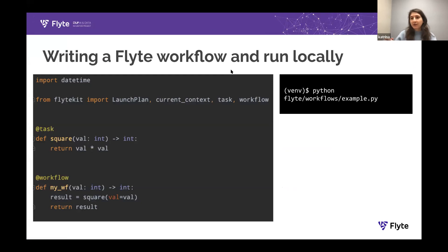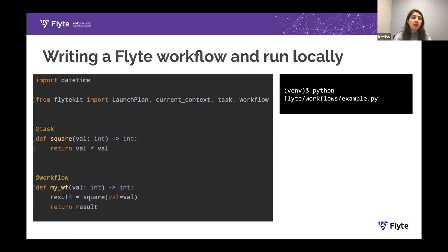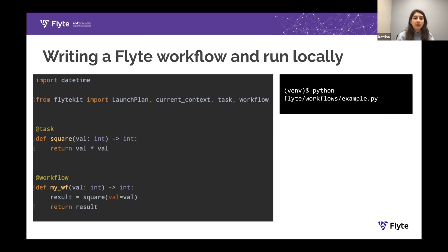So, writing a Flight workflow — hopefully you're all familiar with what Flight workflows look like. Here's a really basic example we're using to walk through. You have the square workflow, which squares an input value. You're probably familiar with writing workflow tasks, workflows, running and testing those locally, but after you're convinced that your code works, you go through the registration process. What exactly happens there?